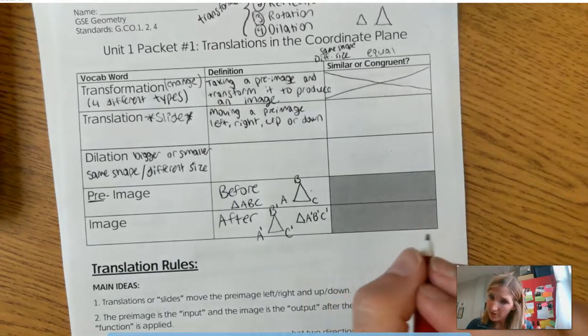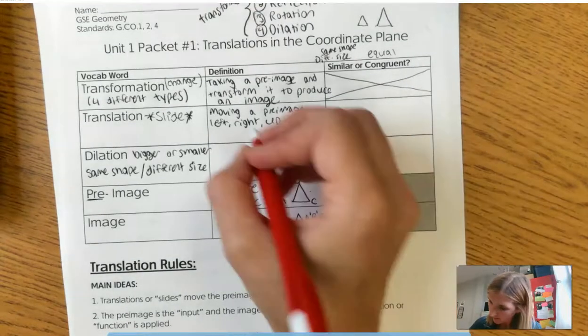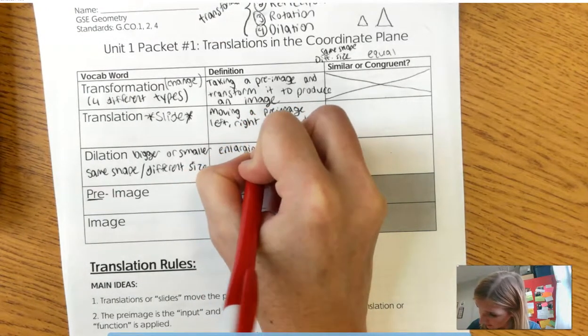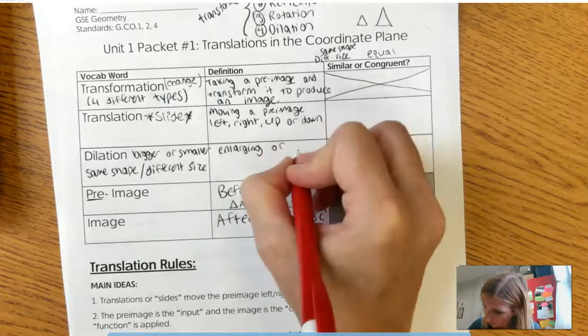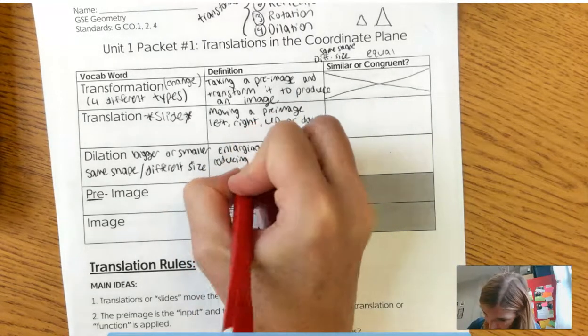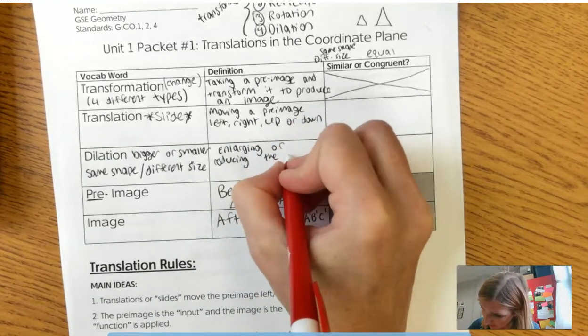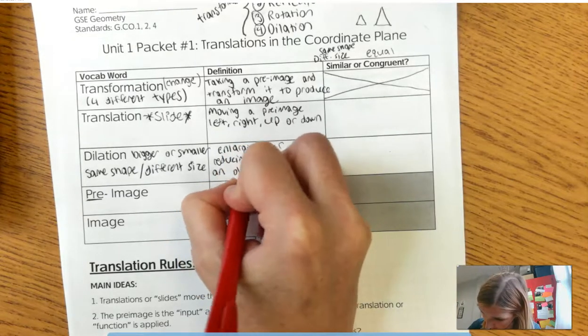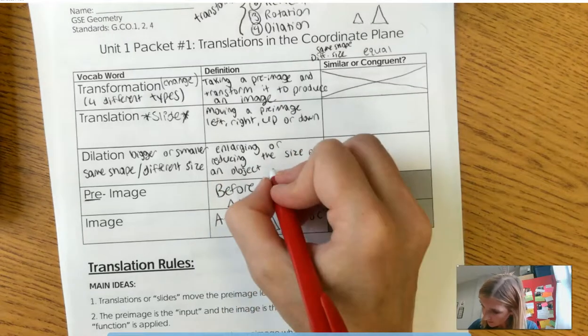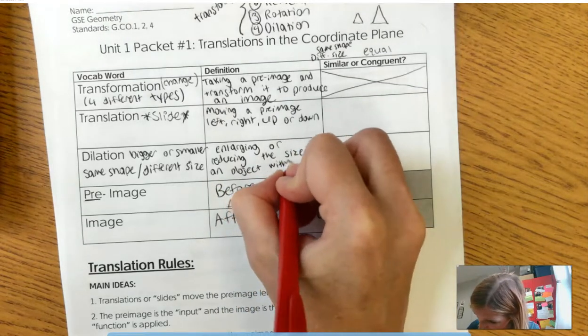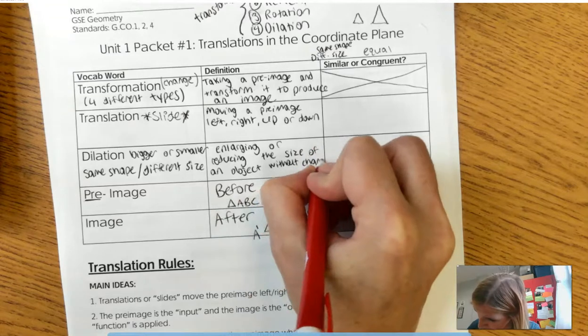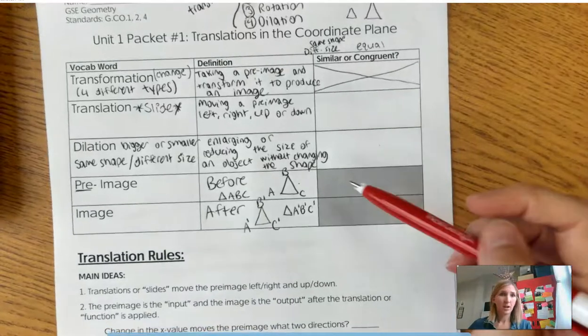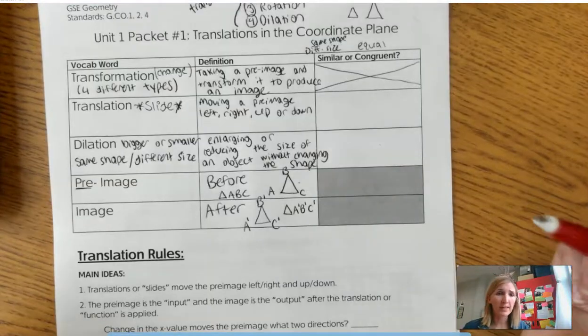Alright, so our fancy geometry definition is going to be enlarging or reducing the size of an object without changing the shape.